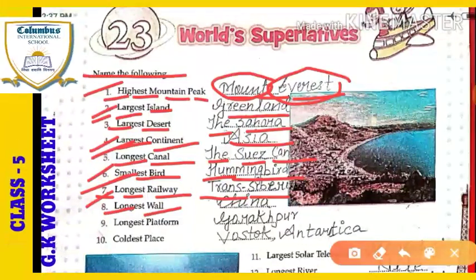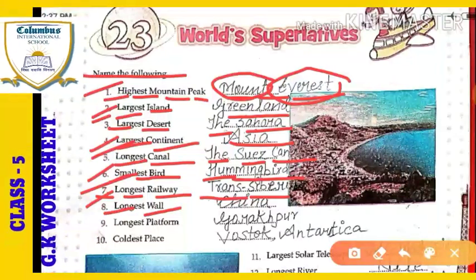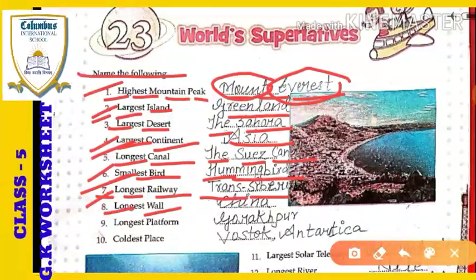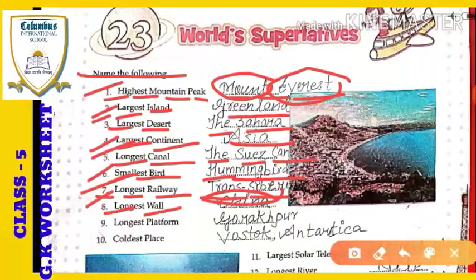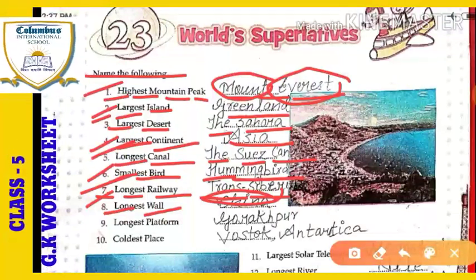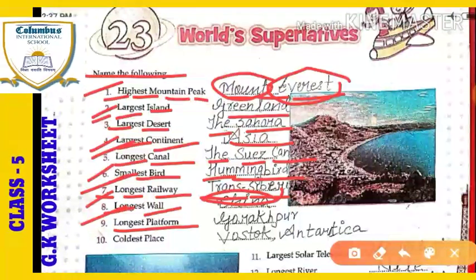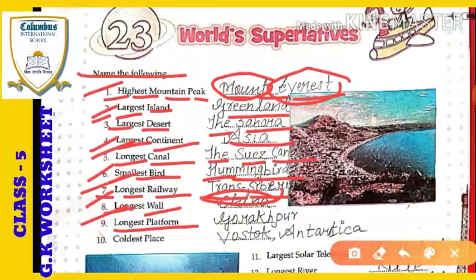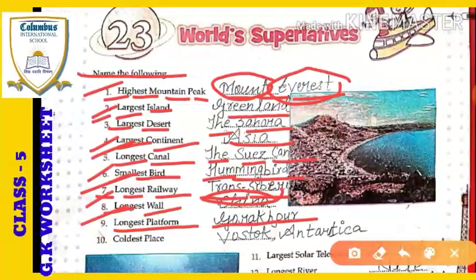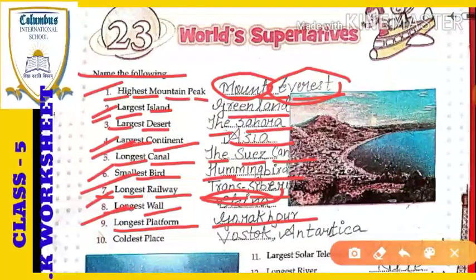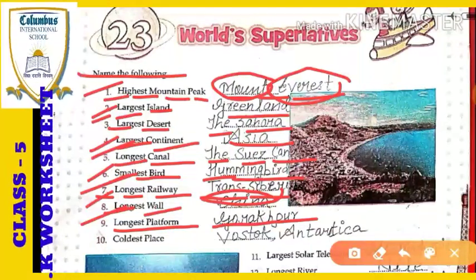Next: the longest wall. Which is the longest wall of the world? The longest wall is the Great Wall of China — China's wall is the longest. Next: the longest platform. We will talk about the longest platform, which is in Gorakhpur, situated in India. The longest railway platform is in Gorakhpur, India.